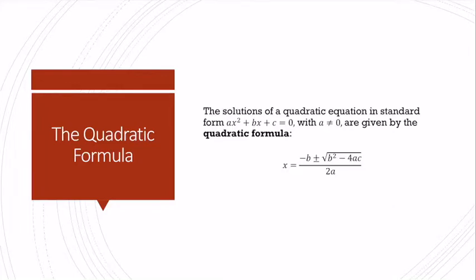The next thing we're going to talk about is the quadratic formula. The quadratic formula is another way to solve quadratic equations. The solutions of quadratic equations — its roots, its x-intercepts — are given by the formula x equals negative b plus or minus the square root of b squared minus 4ac, all over 2a.